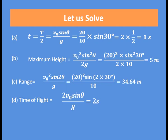Maximum height = V0² sin² θ / (2g). Substituting all given values gives a maximum height of 5 meters. Range = V0² sin 2θ / g, which gives 34.64 meters. The total time of flight equals 2t, or using T = 2·V0 sin θ / g, it comes out to be 2 seconds. This is how you use the formulas for total time of flight, range and maximum height to solve numerical problems.